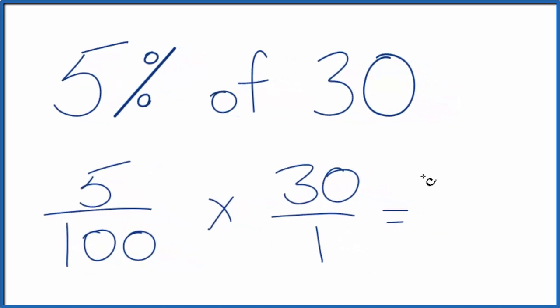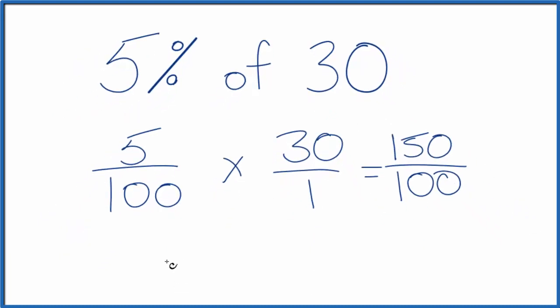5 times 30, that's 150. 100 times 1, that is 100. So now we have this number here that represents 5% of 30. We could simplify this because 50 goes into 150 three times and it goes into 100 two times.